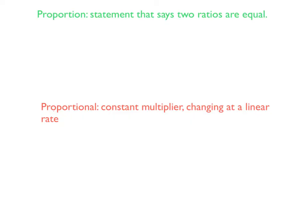The first thing we're going to talk about is just a quick refresher on what a proportion is. So a proportion is a statement that says two ratios are equal. So remember a ratio is like something like this. If I said there was five girls for every four boys, that's a ratio.